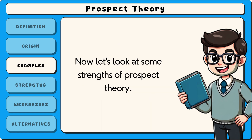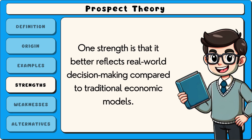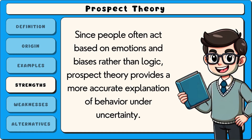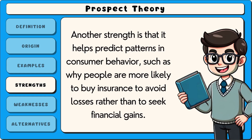Now let's look at some strengths of prospect theory. One strength is that it better reflects real-world decision making compared to traditional economic models, since people often act based on emotions and biases rather than logic, providing a more accurate explanation of behaviour under uncertainty. Another strength is that it helps predict patterns in consumer behaviour, such as why people are more likely to buy insurance to avoid losses rather than to seek financial gains.